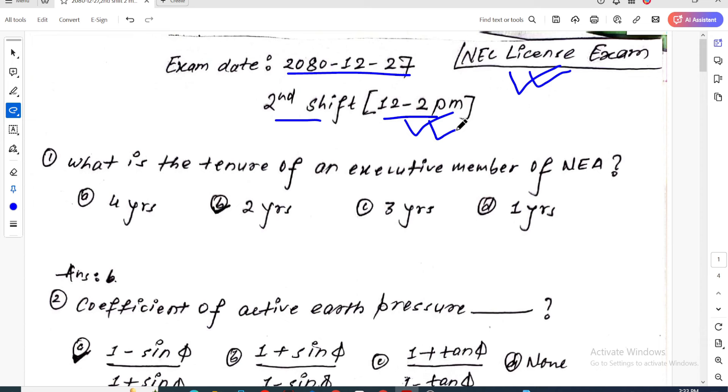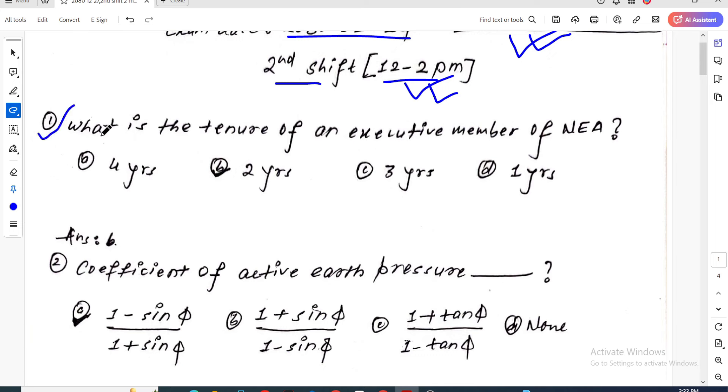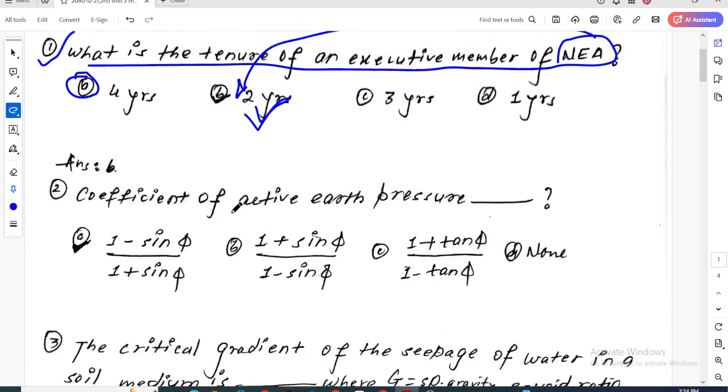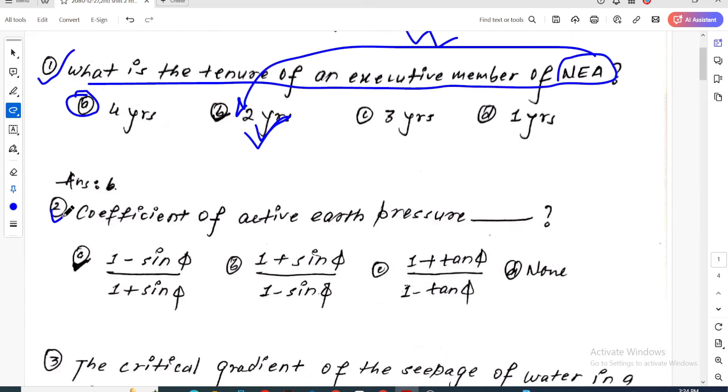Question number one: What is the tenure of an executive member of NEA, Nepal Engineering Association? The answer is two years. Don't confuse this with Nepal Engineering Council members who serve four years. This is a memory-based question from the real exam. I'm making this video to help students next week prepare for the exam.